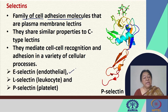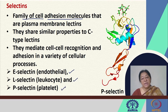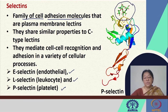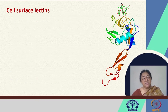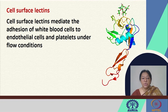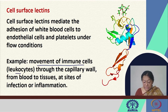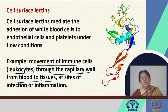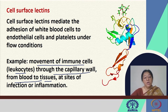There is the E-selectin (endothelial cell selectin), the L-selectin (leukocyte cell selectin), and the P-selectin (platelet-like selectin). Cell surface lectins can mediate the adhesion of white blood cells to endothelial cells and platelets under flow conditions — for example, the movement of immune cells (leukocytes) through the capillary wall from blood to tissues at sites of infection or inflammation.